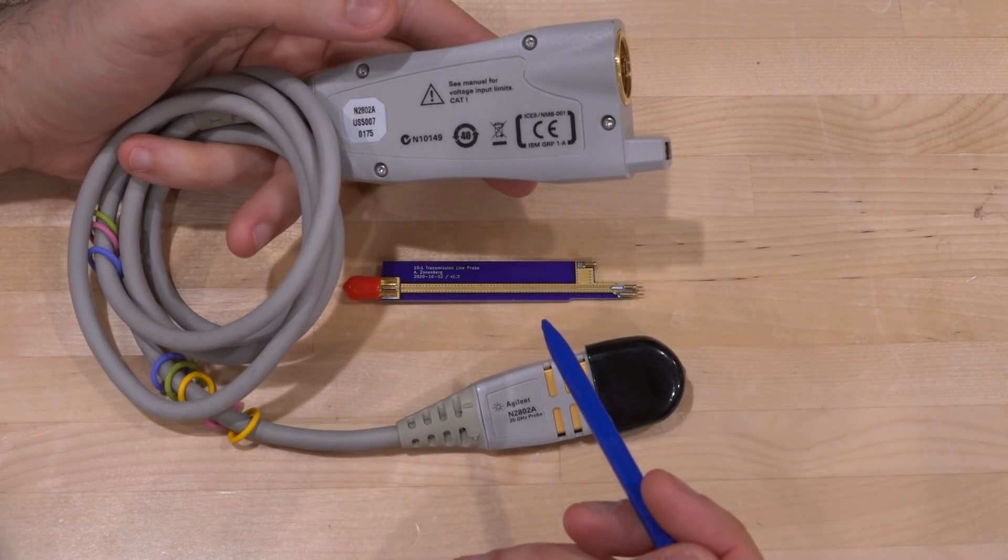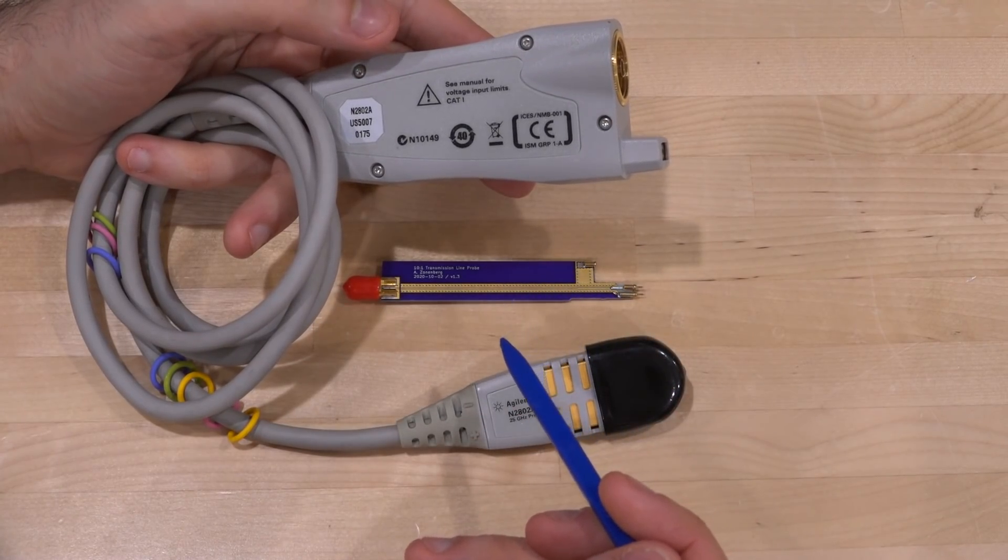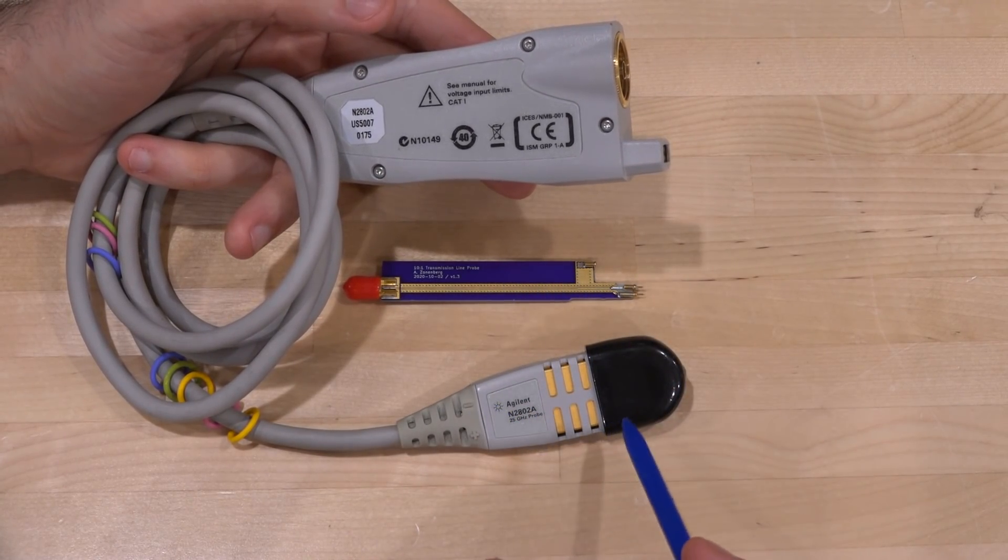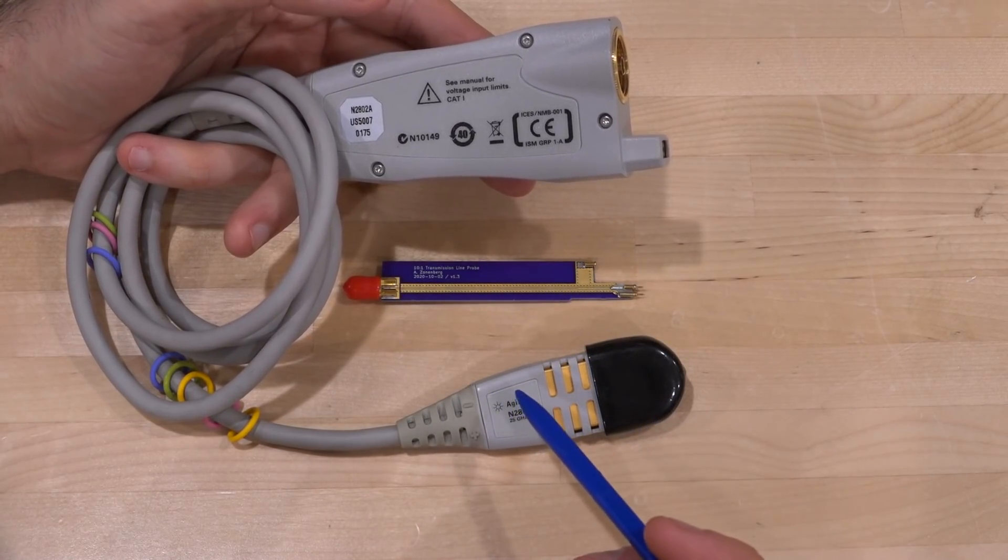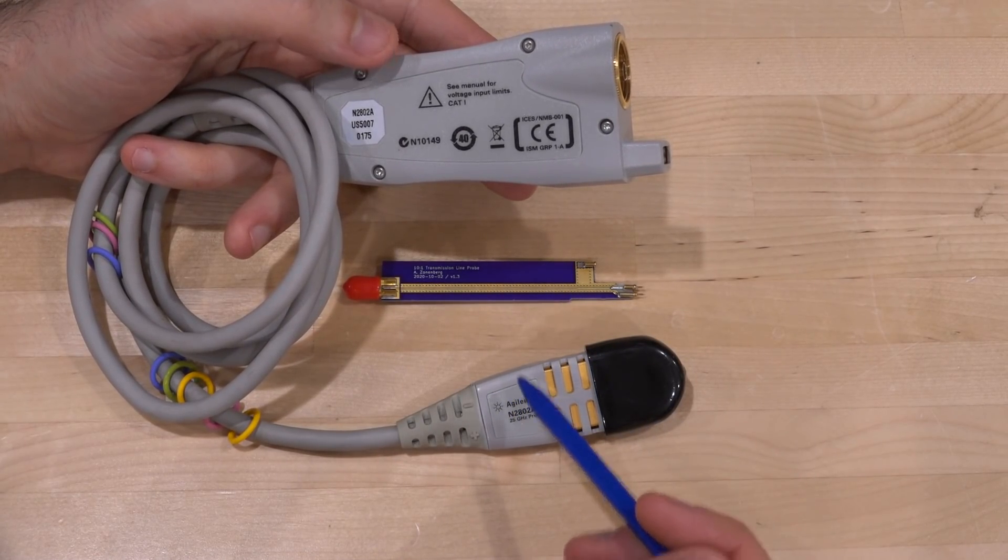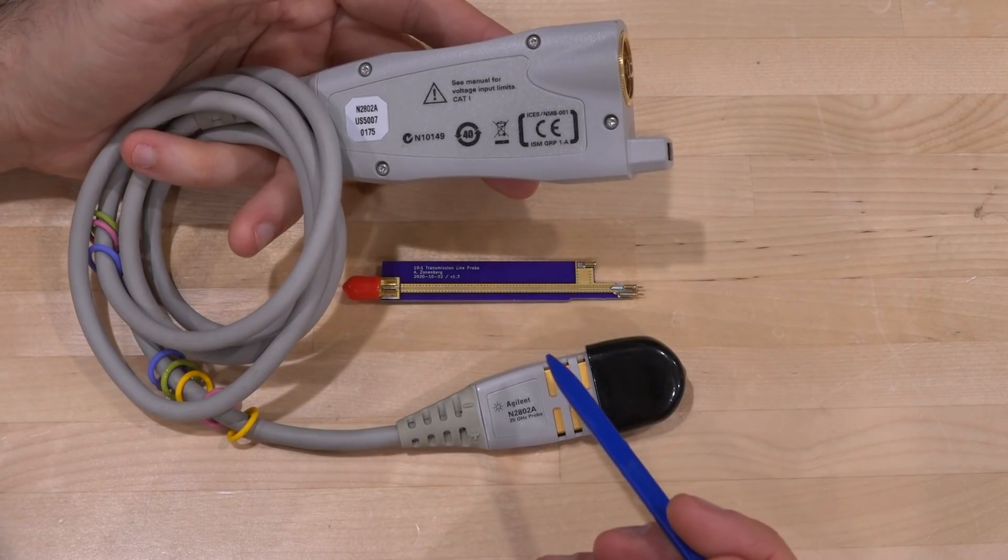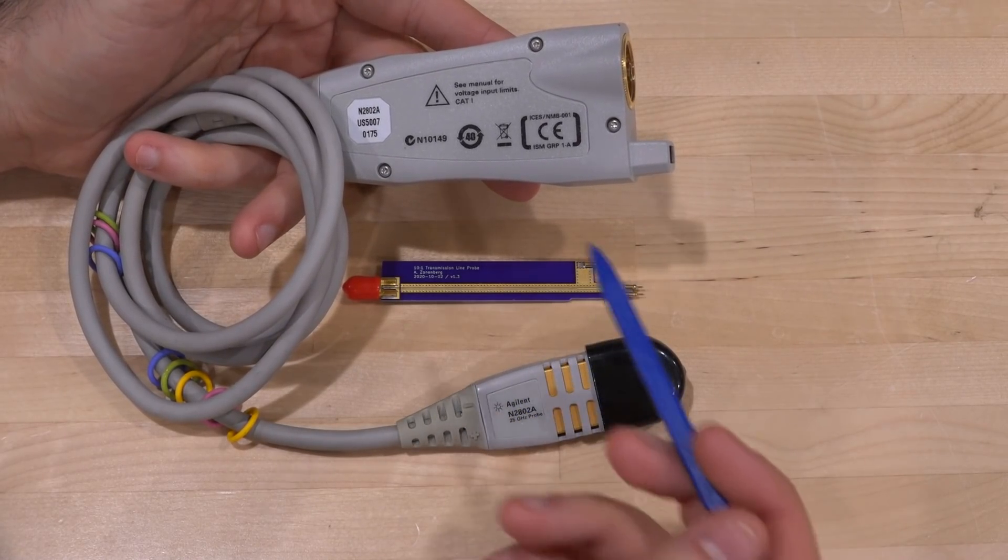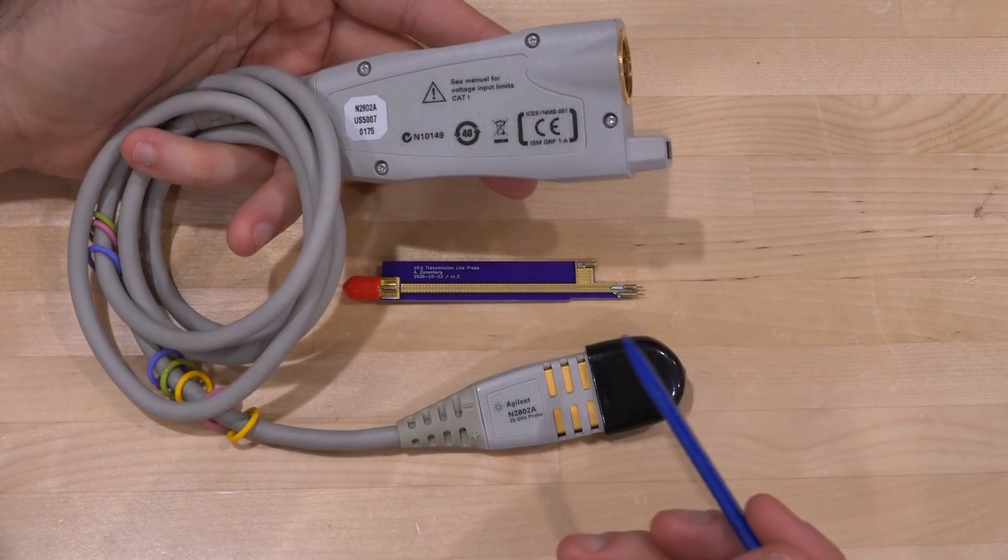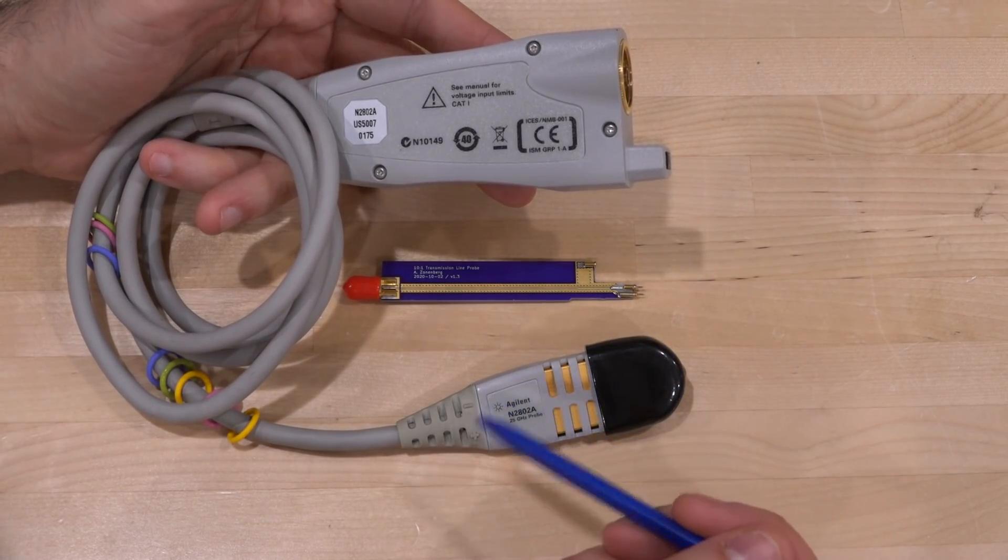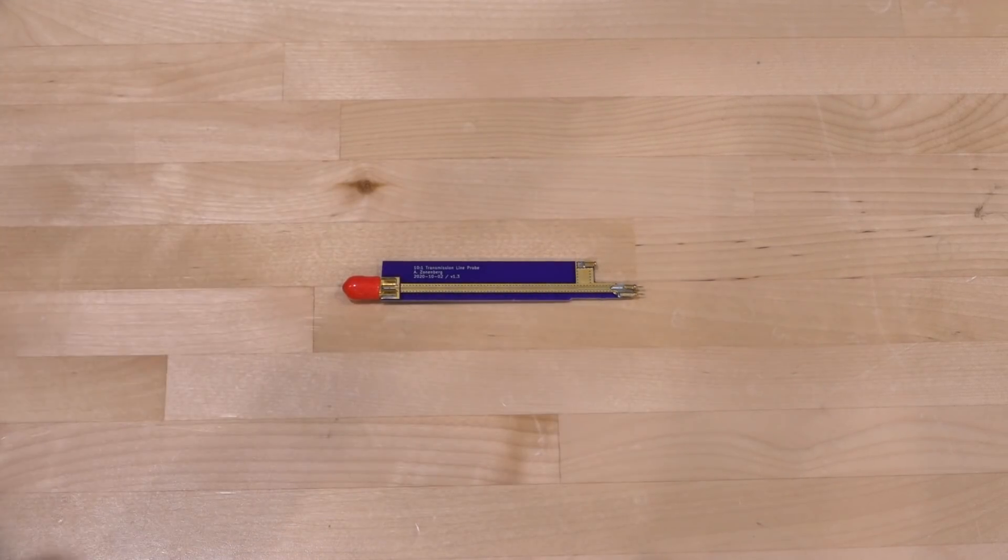Now there are some disadvantages with a probe like this as well. It has limited dynamic range because there is an IC in the front so the non-linearity of the front end is added to whatever you're measuring in your circuit. But of course at the same time you get very good flat frequency response, very high bandwidth, and these things are invaluable in high-speed SerDes measurements, especially on PCBs and so on.